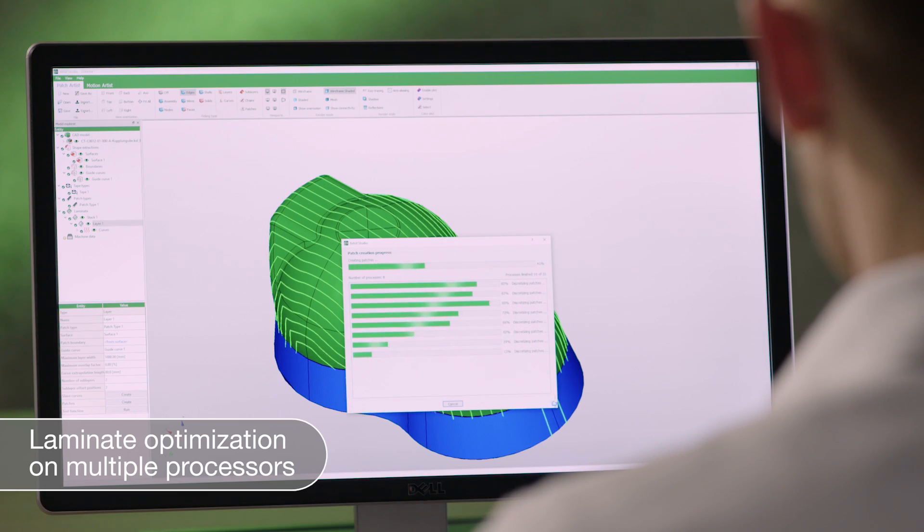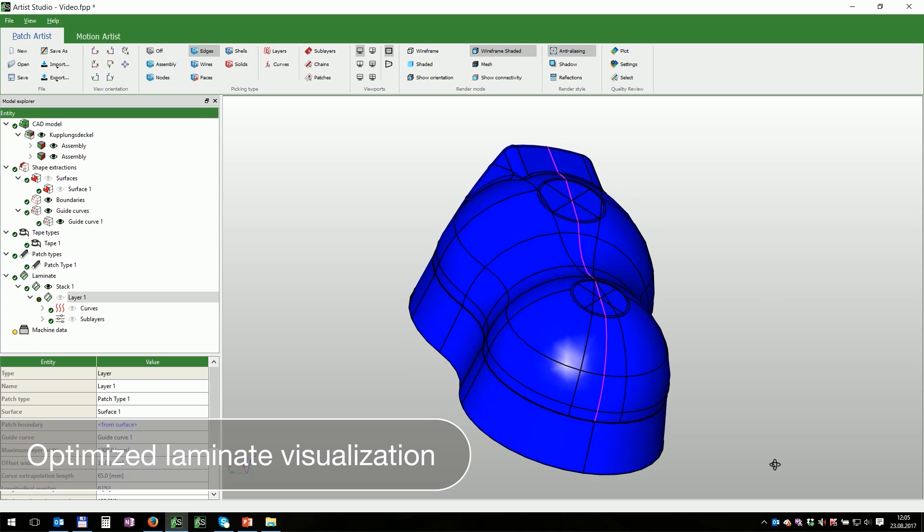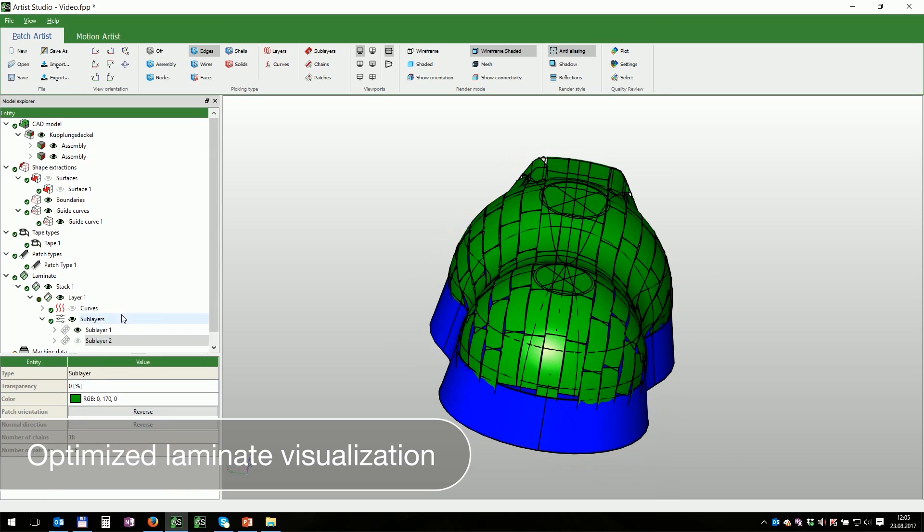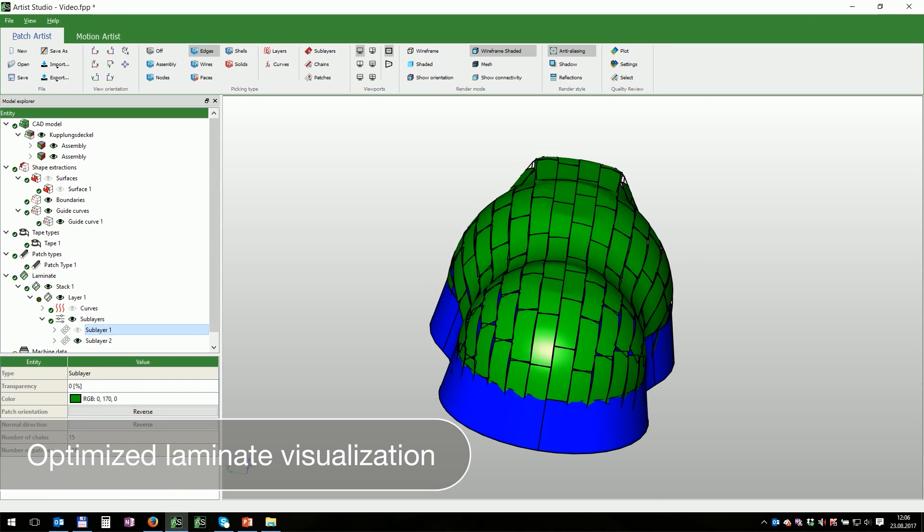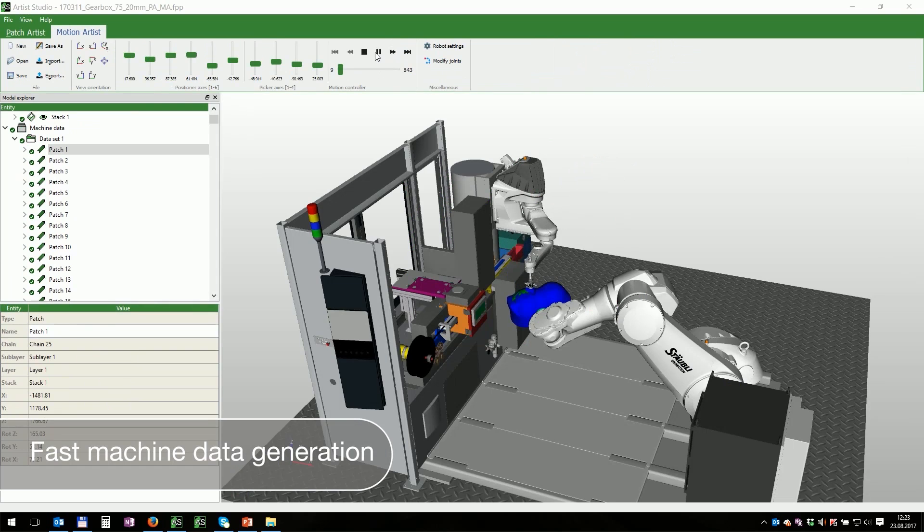You can also increase the mechanical properties with an integrated algorithm for optimizing the patch overlaps. The second module, Motion Artist, generates the machine data with offline robot programming.